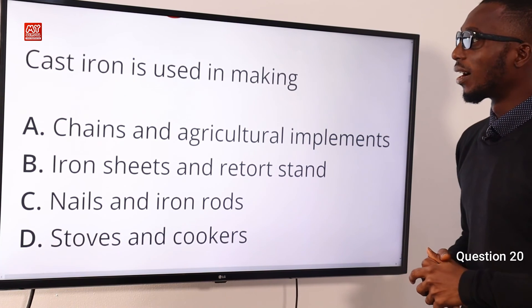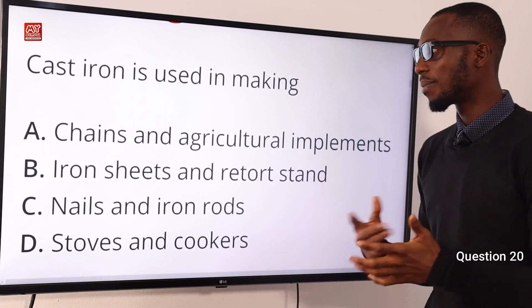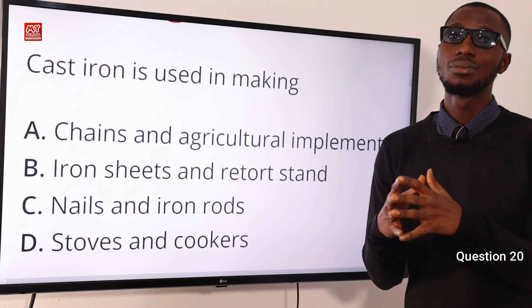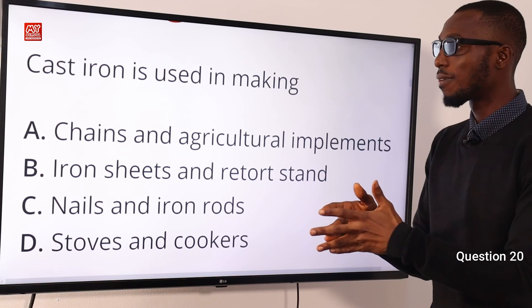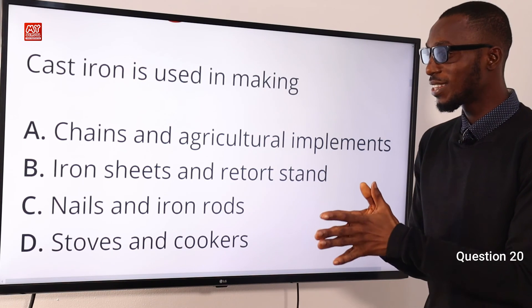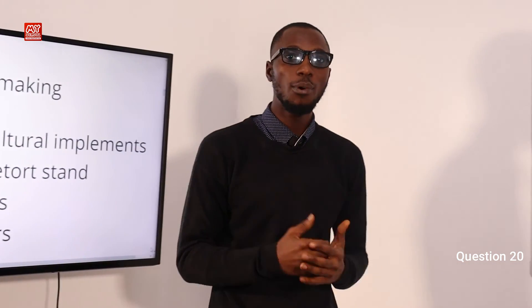Question 20. Cast iron is used in the making of what? Cast iron is actually gotten from pig iron — a pig iron that is remelted, cooled, and molded. We use cast iron to make things like cookers, stoves, railings, and lampposts. So the correct option here is option D, stoves and cookers. We've come to the end of this segment, but there are more videos to be released. Hit the like button, click on the subscribe button, and tap on bell notification to get alerted as soon as we upload the next video clip.